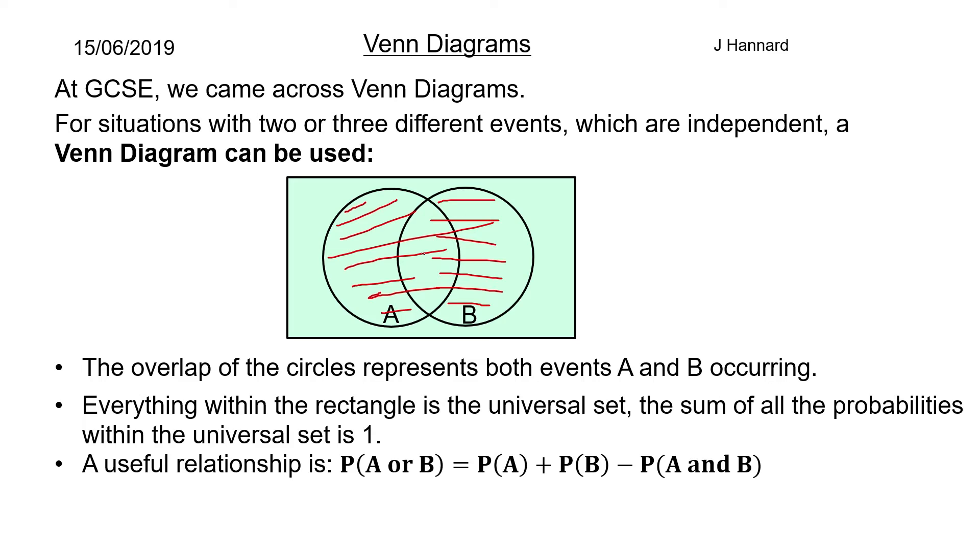But look, we've shaded this middle section twice so we take that off. So we've got the probability of A plus the probability of B minus the probability of A and B. So A's circle plus B's circle minus the bit in the middle.